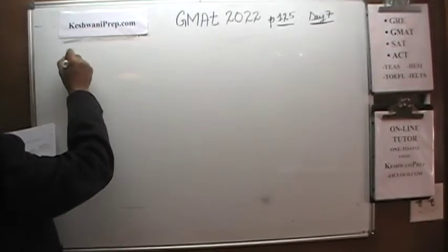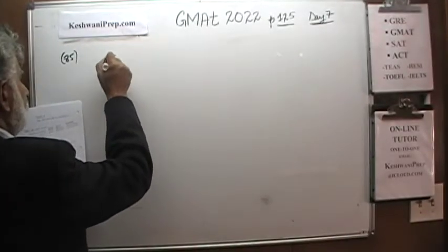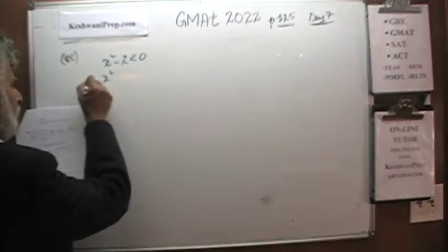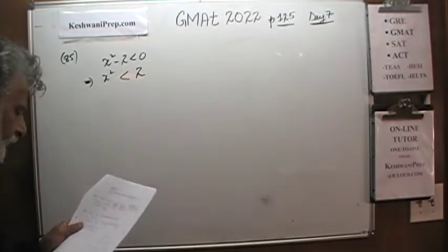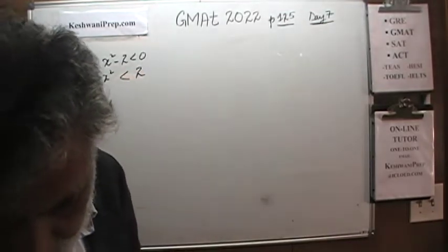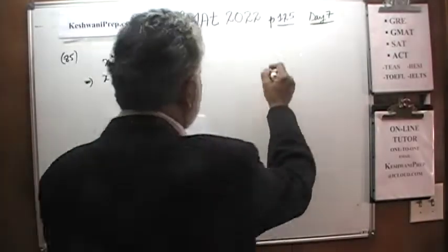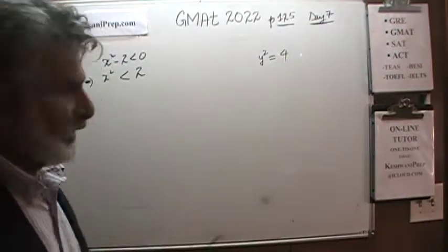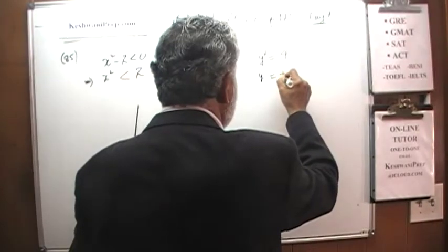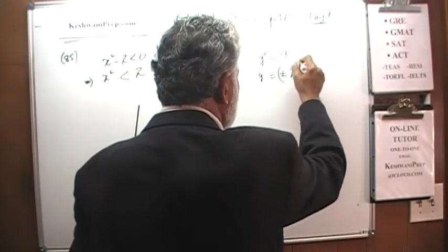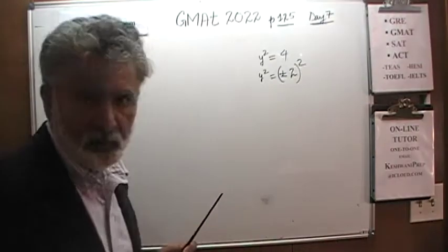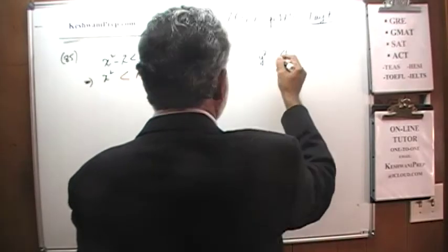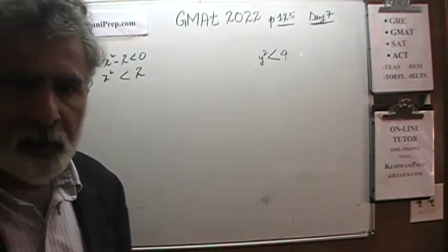In number 85 we are told that x squared minus 2 is less than 0, which implies that x squared has to be less than 2. Let's pause here for a second before we worry about what the right answer is. If we are told that y squared is equal to 4, then we know that y has to be either positive 2 or negative 2. But what happens if instead of an equality, we have inequality? Here the situation gets a little tricky.